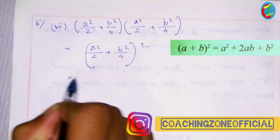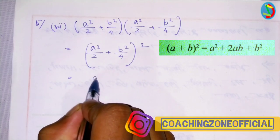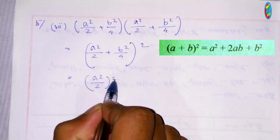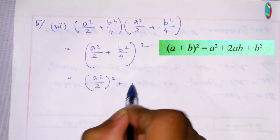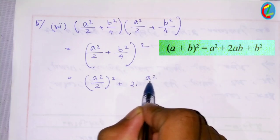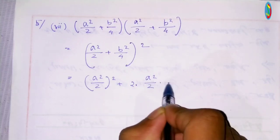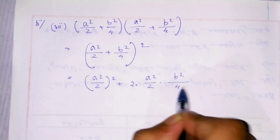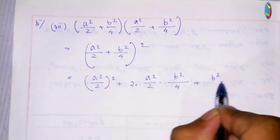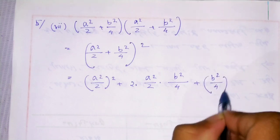And the whole squared divided by 4. Here we do a plus one whole square. That is a squared divided by two, whole square plus twice a, that is a squared divided by two, into b, that is b squared divided by four.